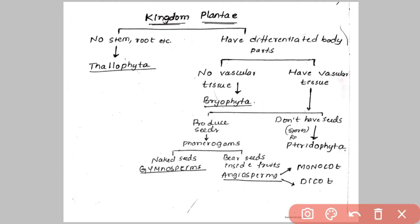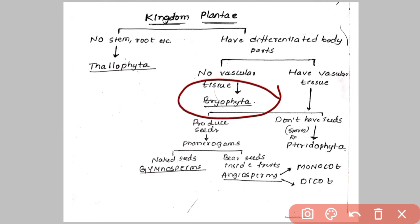Next, at the second level, we will see whether the plant has vascular tissue or not. If there is no presence of vascular tissue for the conduction of food and water within the body, then that will be classified into Bryophyta. Bryophytes are non-vascular and are also called the amphibians of the plant kingdom.